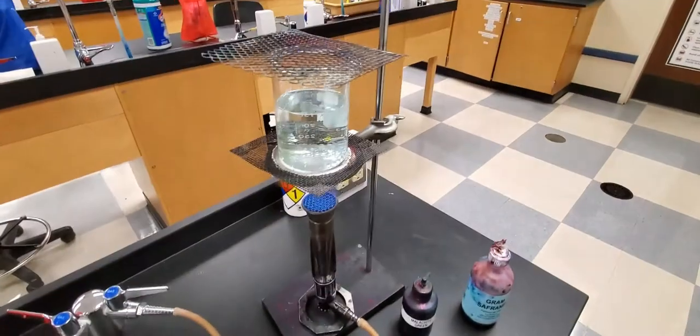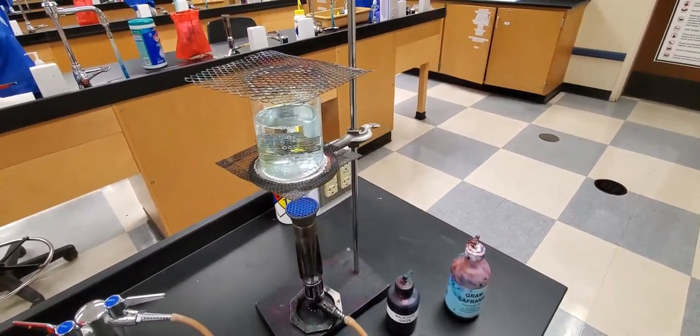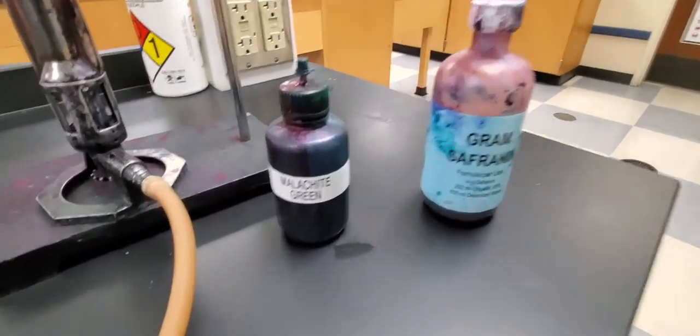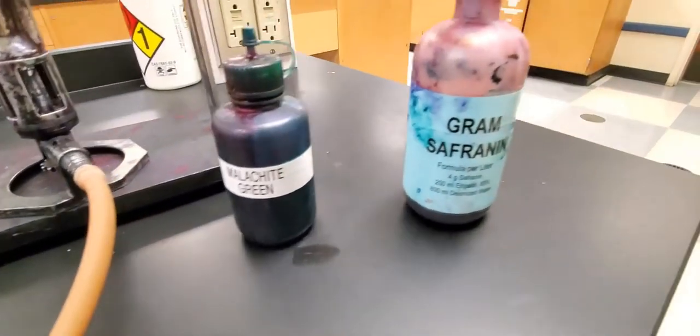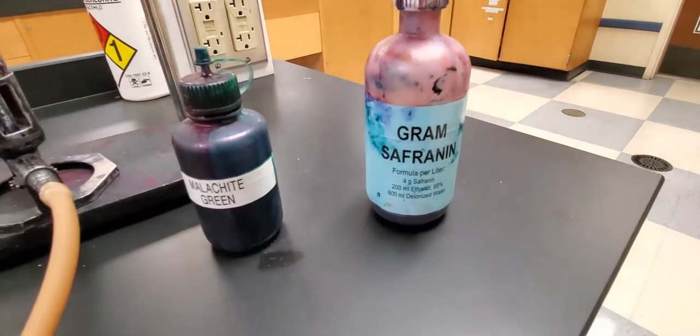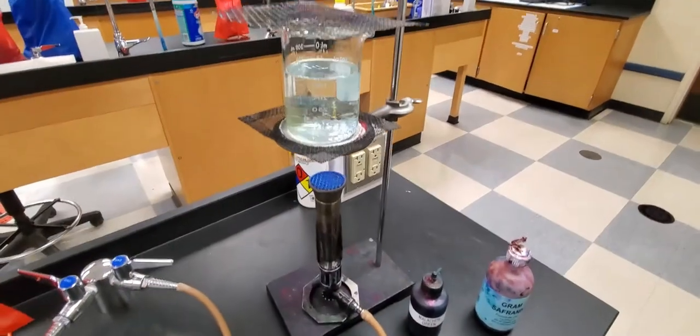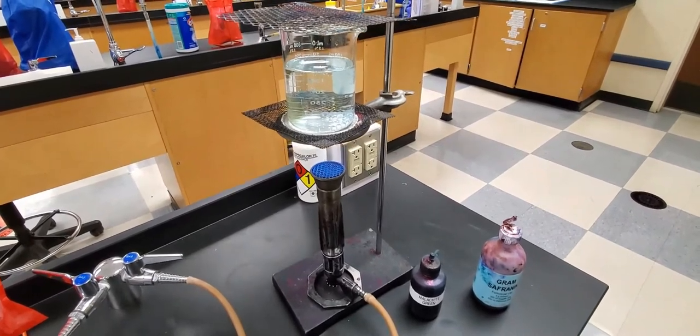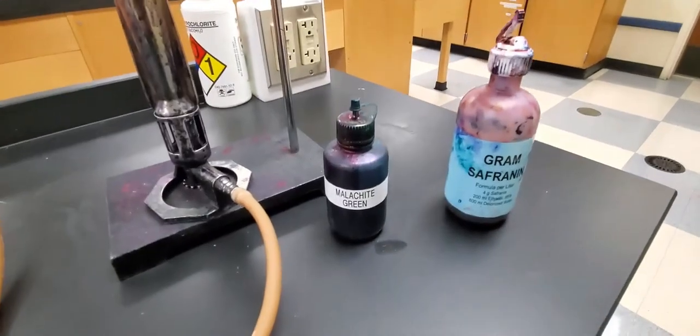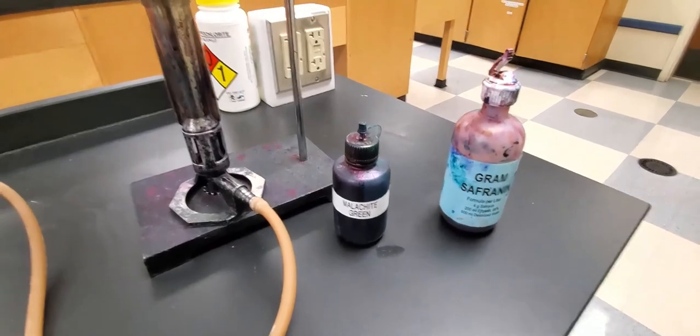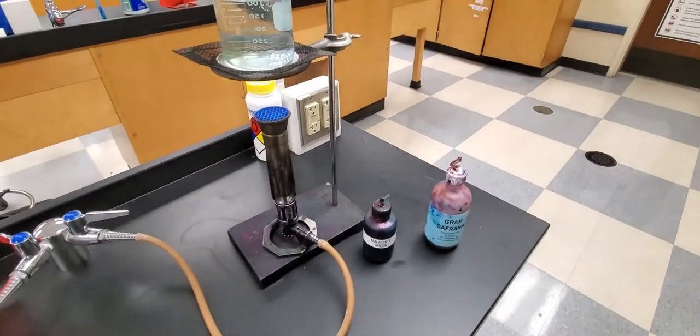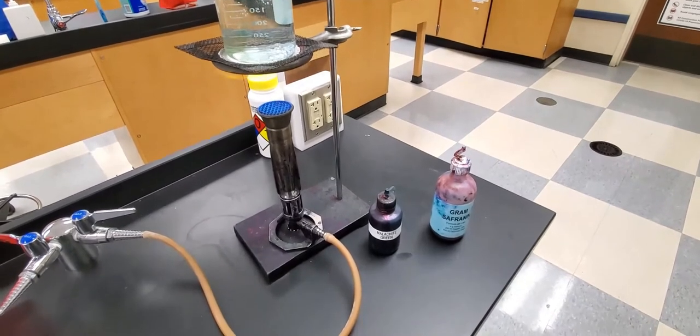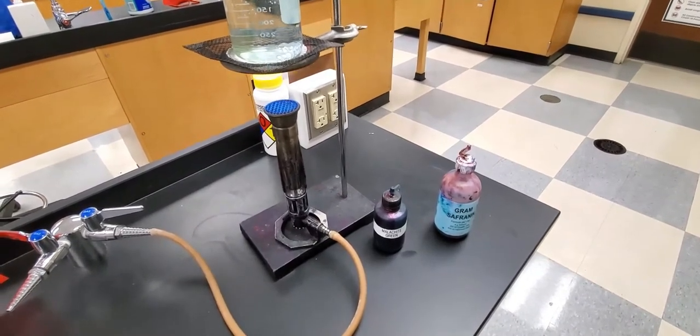Today we're going to be using a boiling water bath along with our malachite green solution and our safranin stain. The point to the water bath is to basically open up the spore coating so that our malachite green dye can get in there. When we go through this process of the endospore stain we're going to decolorize and the malachite green color will come out easily from the body of the cells but it will be trapped in the spore coating.